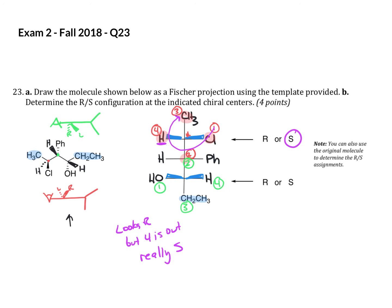In this case, if we draw in our curved arrow from one to two to three, the ethyl is three, it looks R, but again, because priority four is out, it's actually S.